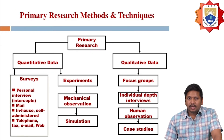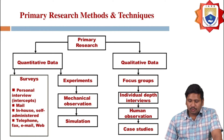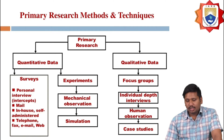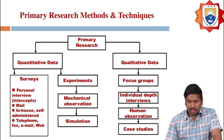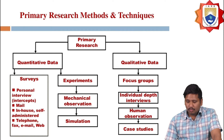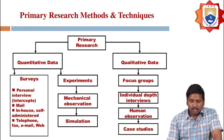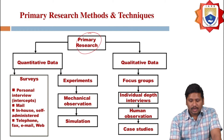The primary research methods and techniques: primary research is classified into two types — quantitative data and qualitative data. Quantitative data is further divided into various phases like surveys and experiments. Experiments can be further divided into mechanical observation and simulation. Similarly, qualitative data can be divided into focus groups, individual depth interviews, human observation, and case studies. So primary research is divided into quantitative and qualitative.